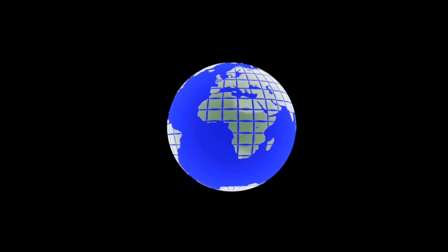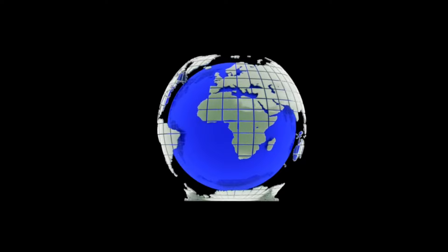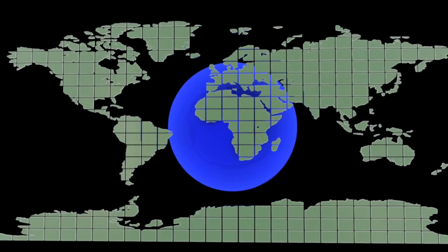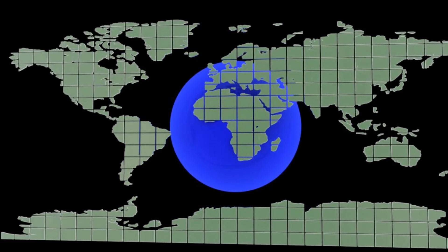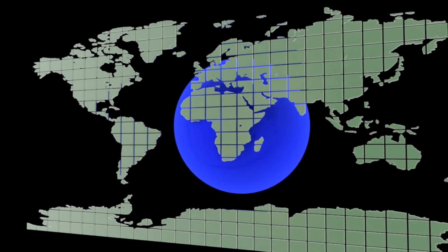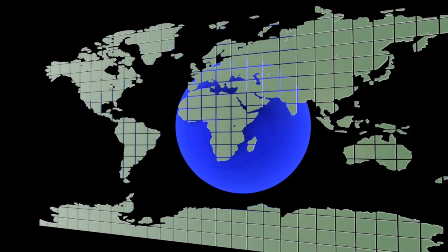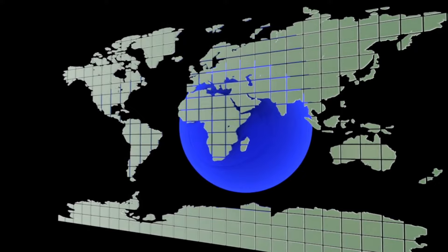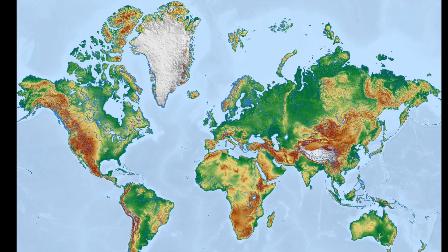Historically, maps can be traced back to ancient times when explorations took place using the magnetic compass and pole star for navigation. While traditional maps made on flat surfaces gave useful information, they gave inaccurate sizes of countries or places depending on their position relative to the equator.